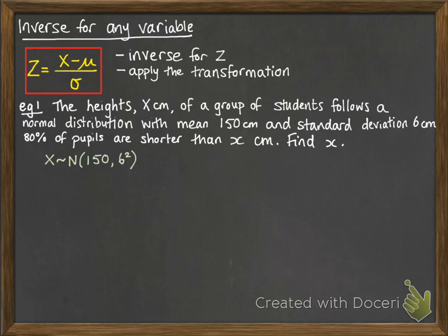So, x follows a normal distribution like this. We're told that the probability that x is less than this value we're looking for is 80%, so that's 0.8. So that looks like that.